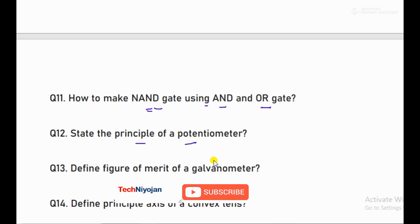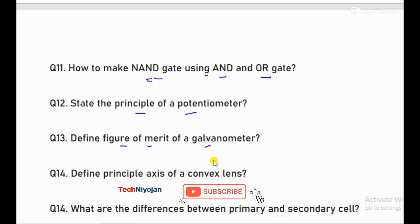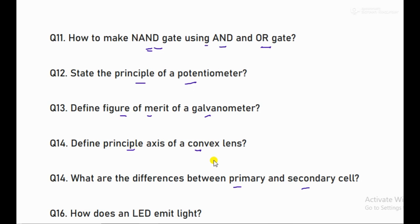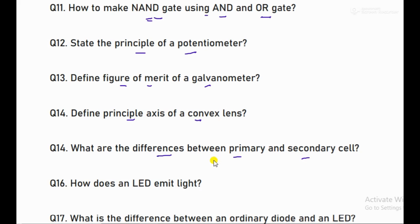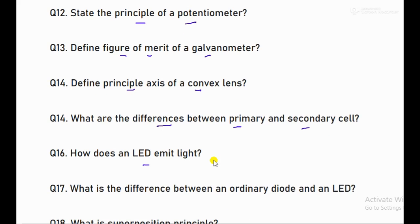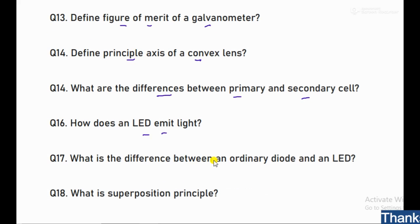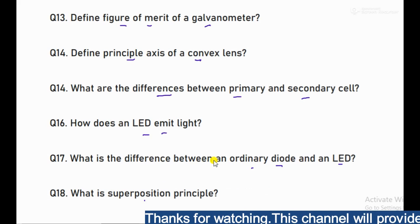What is the figure of merit of galvanometer. Then what is the principal axis, what is the convex lens, define. Then the primary cell and secondary cell, tell the difference. But who never knows, if they ask a simple question then you will regret it. Then the LED light, how do LEDs emit light? The difference between a diode, an ordinary diode, and an LED.